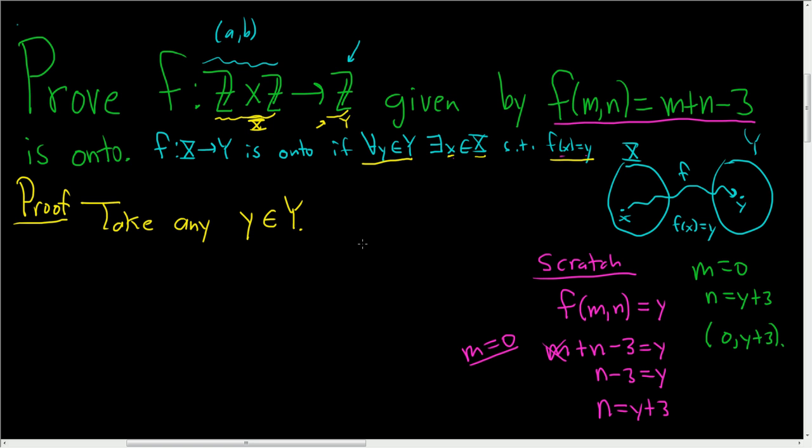And in the proof, we're basically verifying this. So now we go back to the proof, and we say that there exists an x. So we have to mention that. So then, the pair (0, y+3) is in capital X.